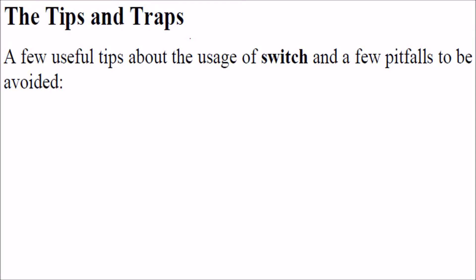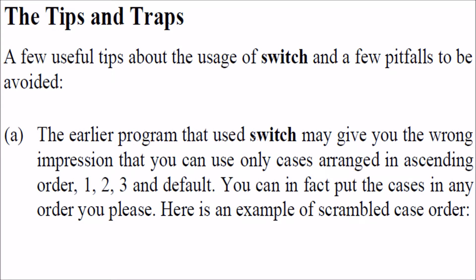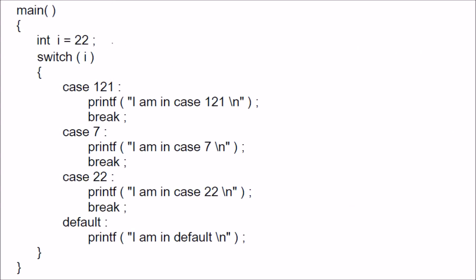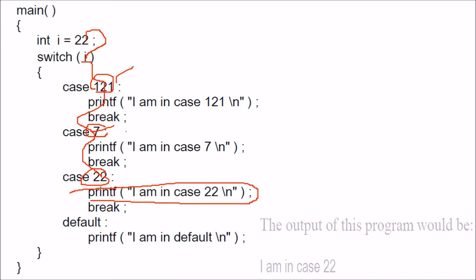There are tips and traps when dealing with the switch-case construct. The cases do not need to be in a proper ascending or descending order — you can have a scrambled order. For example, you can have case 121 first, then 7, then 22 — there is no particular order required. The value will still be matched and the correct line will be printed.